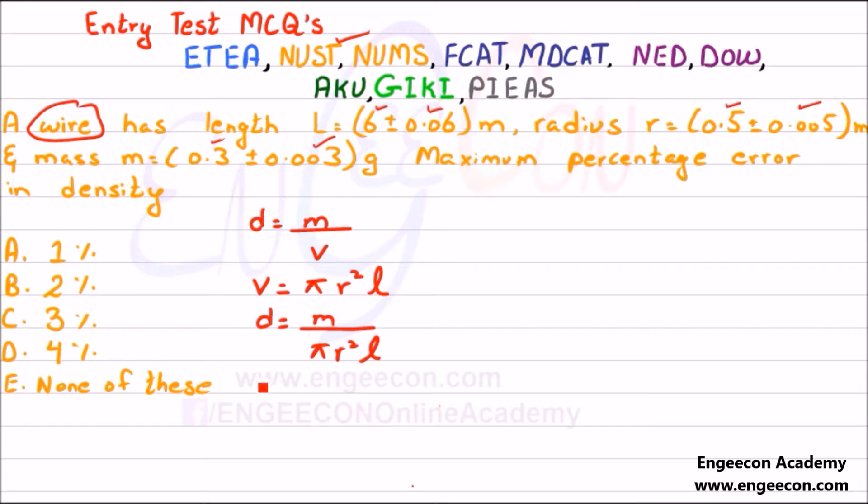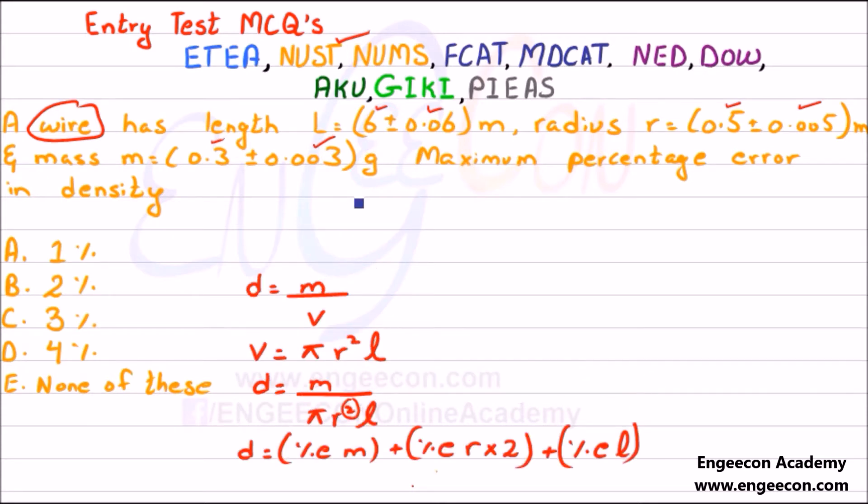For finding the maximum percentage error in density, the formula will be percentage error in mass plus percentage error in radius multiplied by 2, as we have a power of 2, plus percentage error in length.